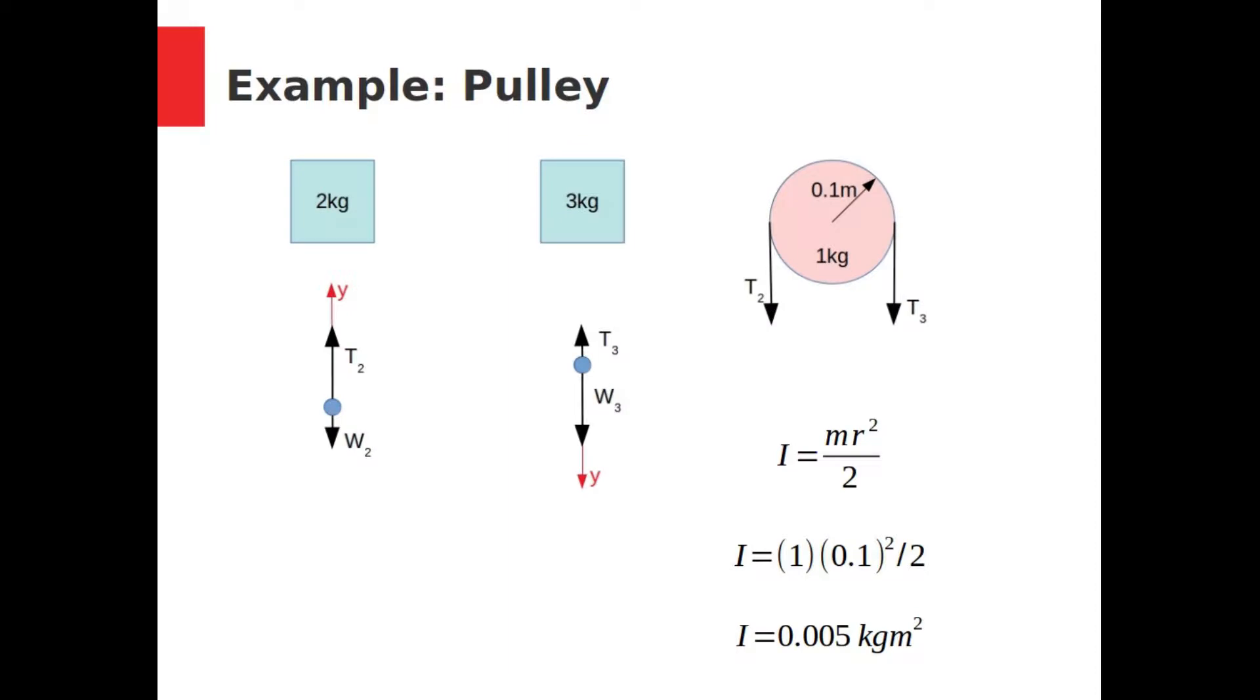To solve this, we start by drawing free body diagrams of the two blocks and the wheel. The free body diagrams for the blocks just contain their weights and their tensions. Since we know the 2 kg block will ascend and the 3 kg block will descend, we will set the axes on each block such that the acceleration for both will be positive.